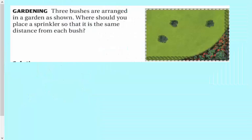I was going to go back to this other page here. This is kind of an example. It says, three bushes are arranged in the garden as shown. Where should you place a sprinkler so that it is the same distance from each of the bushes? So what you'd want to do here, basically, is to find the center.